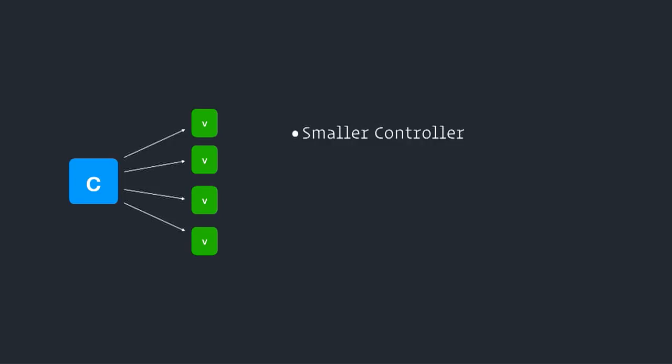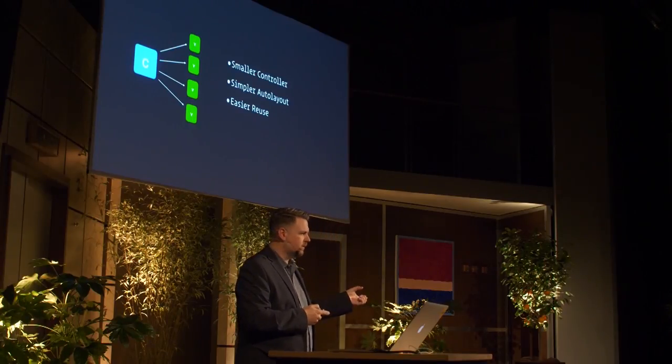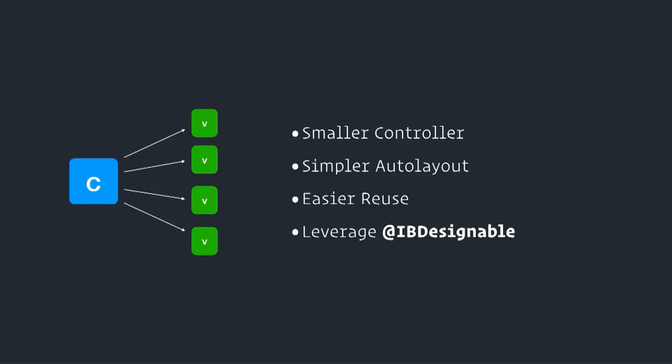That gives us a smaller controller — our controller actually has no code in it now. It's ready to tackle the purpose of a controller: responding to view events, user input, and state changes in our model. We have simpler auto layout constraints because each UIView subclass has a narrow focus. And when building the larger view, we assemble the larger pieces. We also get easier reuse: if I want that button or that profile avatar view in a table view cell, it's already a subclass. And we can leverage IBDesignable to make the storyboard experience more closely match the runtime experience.